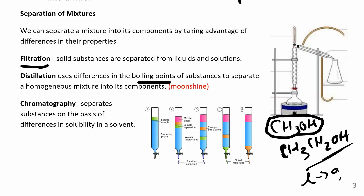So you have the mixture in a flask, you heat it up, and the methanol boils first. It goes up a column as a gas, then gets condensed — you run cold water around a condensing chamber to turn the gas back into a liquid. That's how you separate the two liquids. The one with the lower boiling point comes out first; you collect it. This only works when the boiling points are different enough that you can see when each one is boiling.